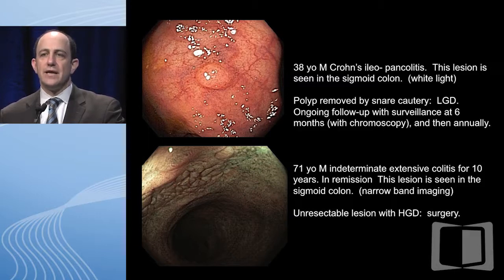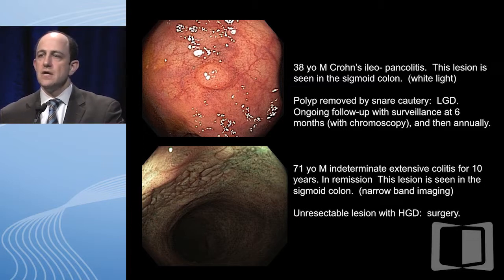A 38 year old with Crohn's ileal pancolitis had this lesion in the sigmoid colon found on white light. There's deep remission here but clearly some distortion of the mucosa consistent with chronic colitis. The polyp was removed by snare cautery and was low-grade dysplasia — the pathologist read it out as polypoid low-grade dysplasia and did not use the term adenoma. It could have been a sporadic adenoma in the setting of Crohn's colitis, but the reality is we can't tell without better markers.